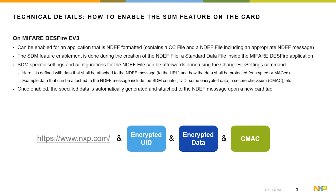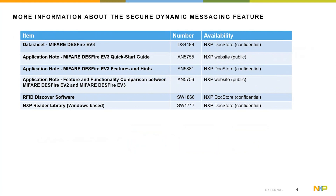Once SDM is enabled, the specific data is automatically generated and attached to the NDEF message on each tap. Here is an example of an nfc.com URI NDEF message with the card UID, encrypted data of a file, and the CMAC checksum attached to it. For more information about secure dynamic messaging, please visit the product page of MIFARE DESFire EV3 on nxp.com. You can also find the datasheet and application notes for MIFARE DESFire EV3 at nxp.store.